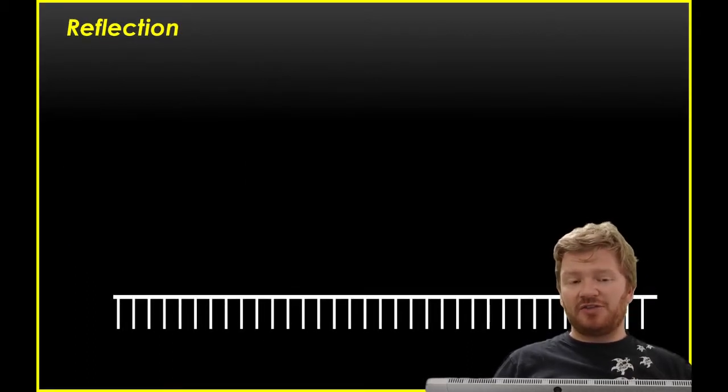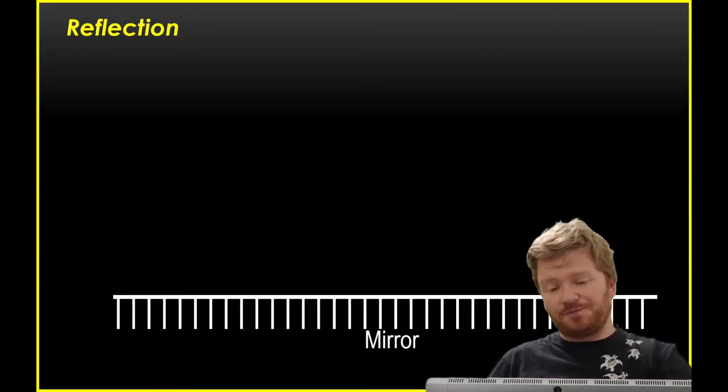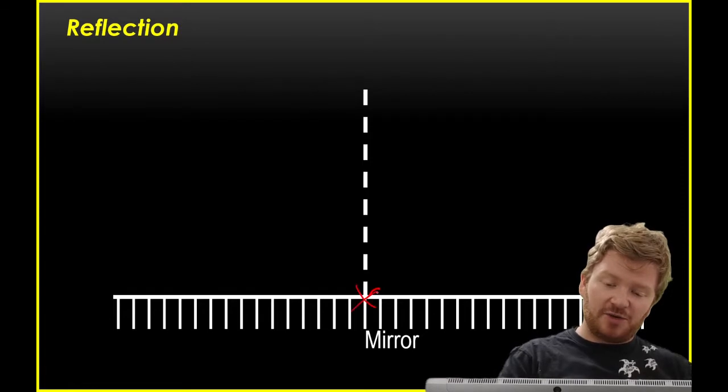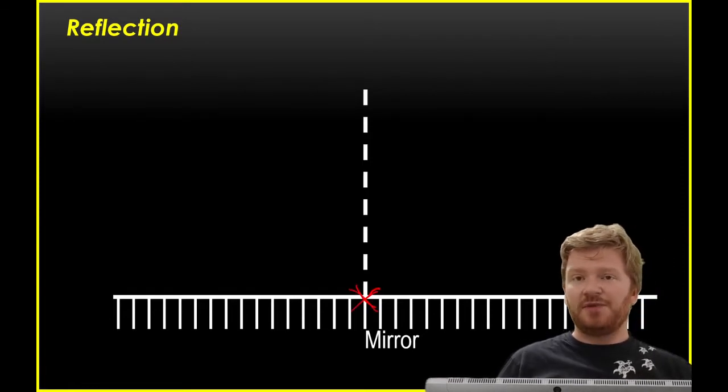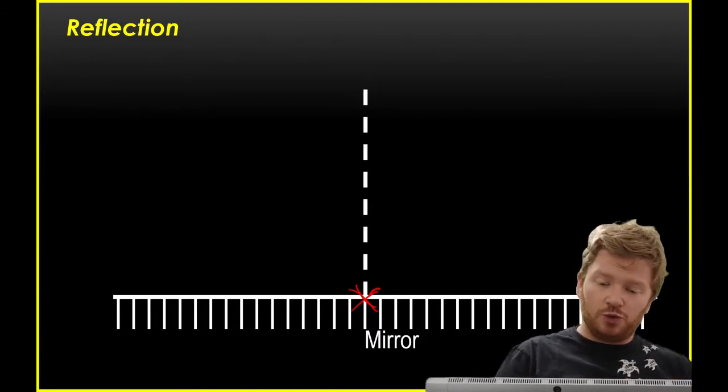So you're probably familiar with a diagram like this. Reflection happens when light often hits a mirror, and we often draw mirrors like this - it's a long line across with these little tick marks like that. I'm going to say that the light is going to hit at this point. And wherever light hits something, we're going to draw an imaginary line called a normal.